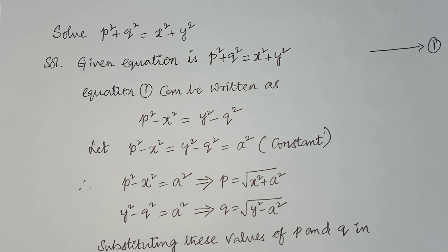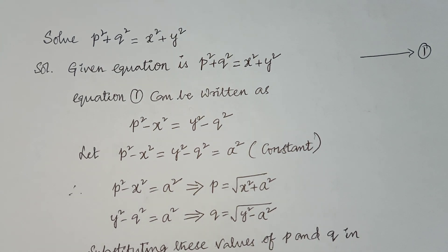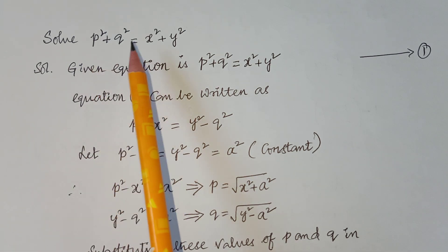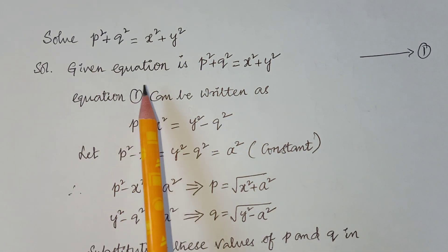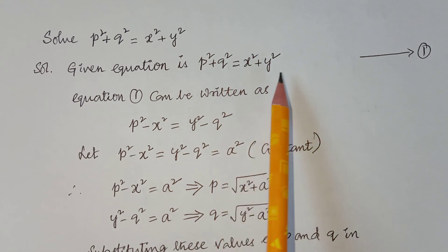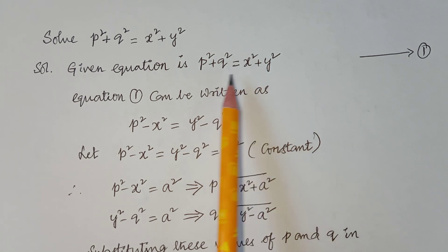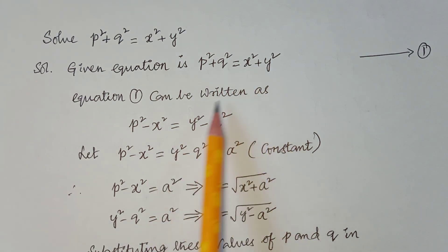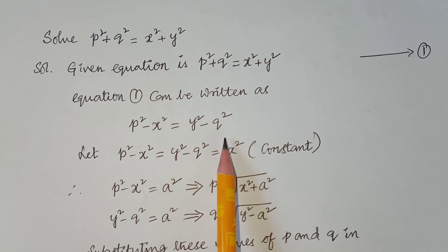Now let us solve a problem of type 3: solve p² + q² = x² + y². This is the given equation. We need to separate it: the equation can be rewritten as p² − x² = y² − q², taking x² to one side and q² to the other side.